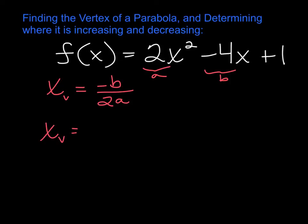So the x part of my vertex, the opposite of b would be 4 over 2a, which would be 2 times 2, so we'd get 4 over 4, so we'd get 1.